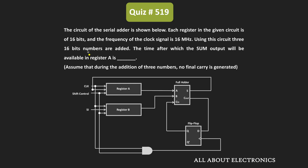Hey friends, welcome to the YouTube channel All About Electronics. In this question, we have been given a serial adder where each register in the circuit is of 16 bits. The clock frequency is equal to 16 MHz. Using this circuit, three 16-bit numbers are added. We need to find the time after which the sum output of these three numbers will be available in register A. We are also given that no final carry is generated, meaning the sum output is not more than 16 bits.